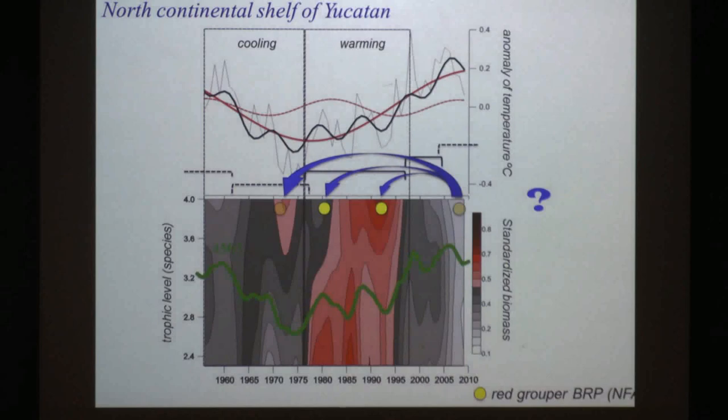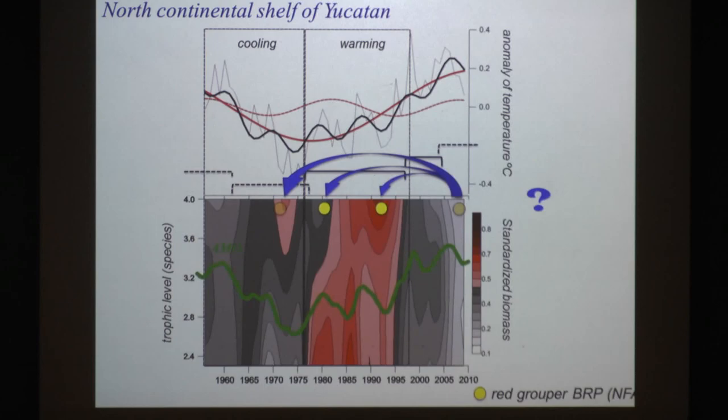This is the North Continental Shelf of Yucatan — more or less the same picture. In this case it's the red grouper. The red grouper is now about 30% of the size it was in the 70s. Again, the National Fishing Act recommended recovering in different steps to the previous stage, but we cannot guarantee to recover the stocks by controlling fish mortality only.